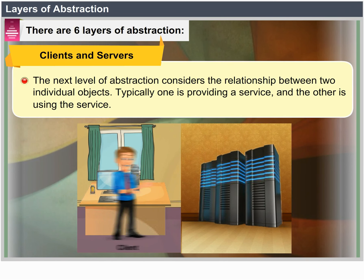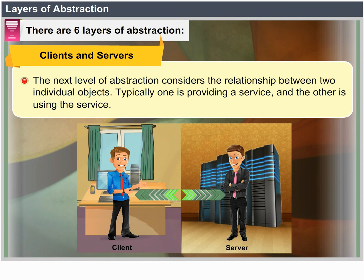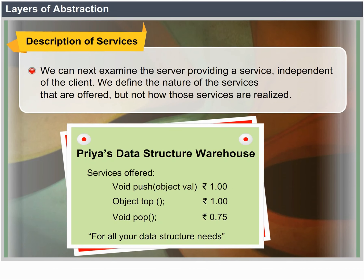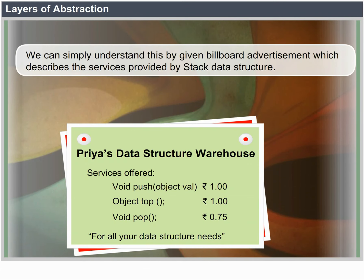Clients and servers: The next level of abstraction considers the relationship between two individual objects. Typically, one is providing a service and the other is using the service. We can next examine the server providing a service independent of the client, and define the nature of the services offered but not how those services are realized.